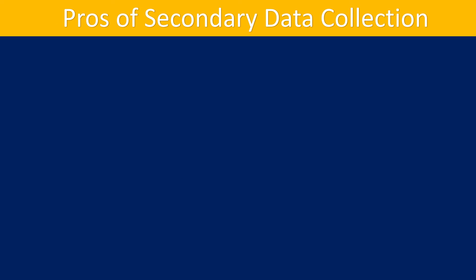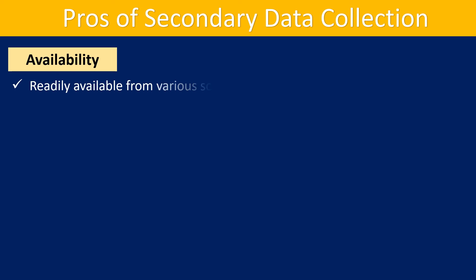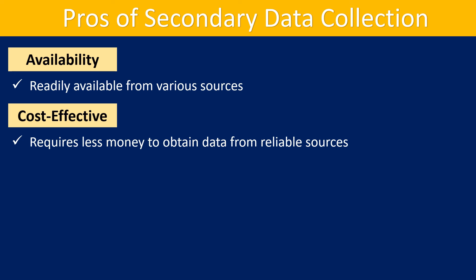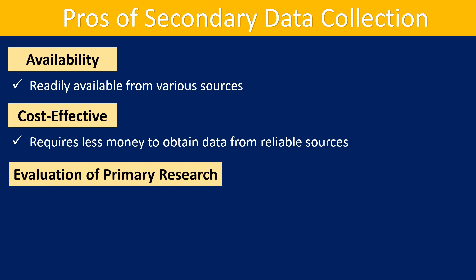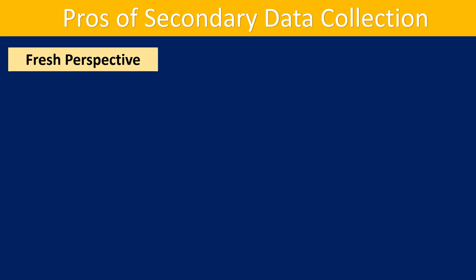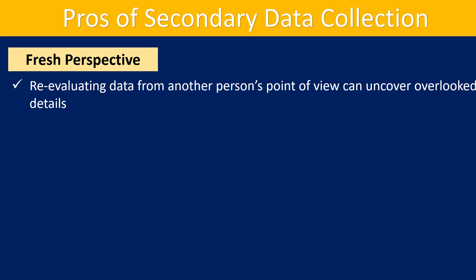Pros of secondary data collection methods: Availability — more secondary data is readily available from various sources. Cost effective — secondary data collection is less expensive than primary methods because it requires less money to obtain data from reliable sources. It also allows evaluation of primary research, providing insights into its effectiveness and helping businesses hypothesize and evaluate its cost. Fresh perspective — re-evaluating data from another person's point of view can uncover overlooked details, potentially leading to the discovery of new features or solutions.